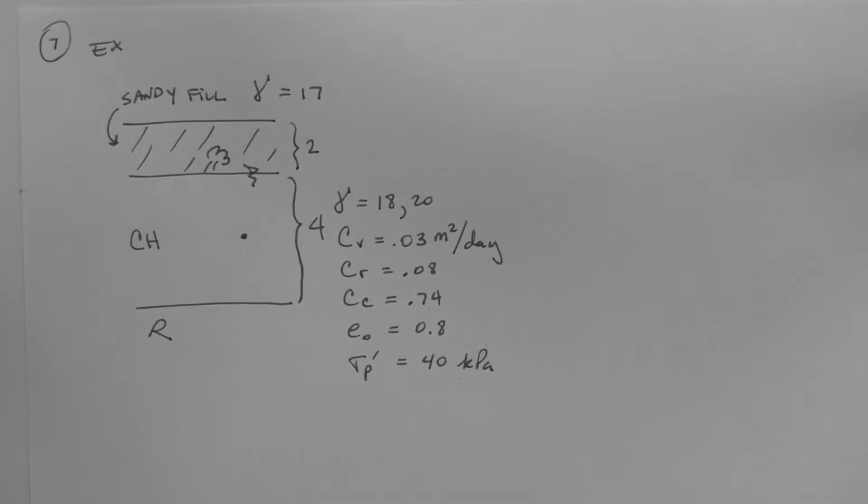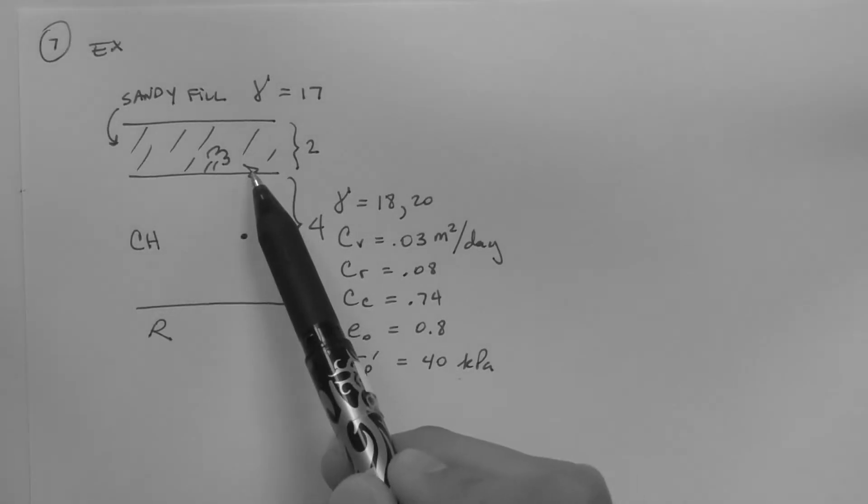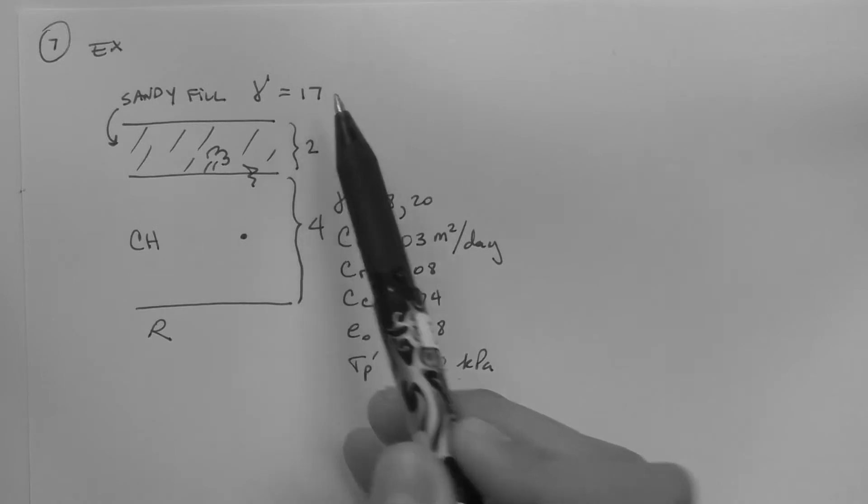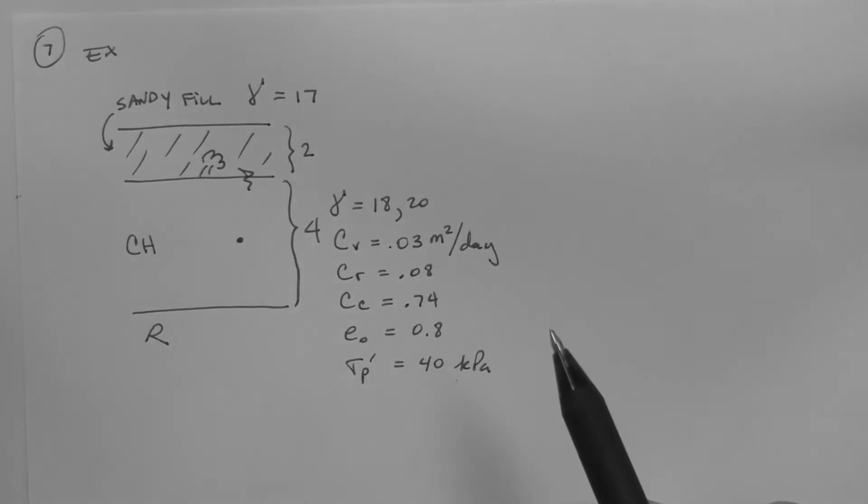Let's do a time rate of consolidation example with multiple questions. Here we have a field that is going to be placed on top of a clay layer, and the clay layer rests on rock. The layer is saturated. The field has a unit weight of 17 kN per meter cubed. The thickness of the field is 2 meters, and the thickness of the clay layer is 4 meters.